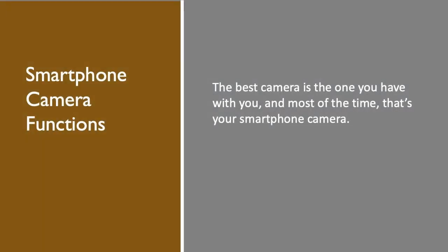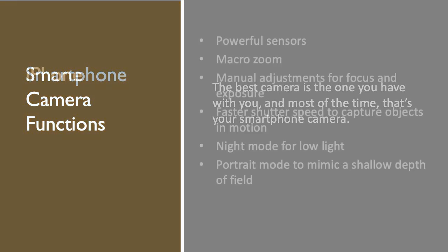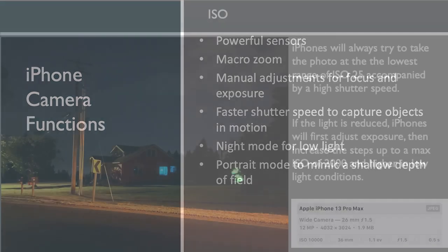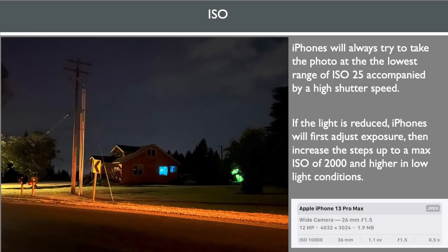The best camera is the one you have with you, and most of the time that's your smartphone camera. Smartphone cameras are great tools to get you in the habit of photographing every day. Here are a few things you can almost always count on with an iPhone: powerful sensors, the ability to zoom in at a macro level, manual adjustments like focus and exposure, faster shutter speeds to capture objects in motion, night mode for better shots when it's dark, and portrait mode to mimic a shallow depth of field. You can't manually set the ISO on an iPhone without the use of an app.